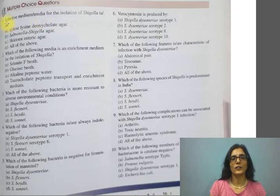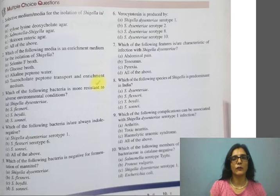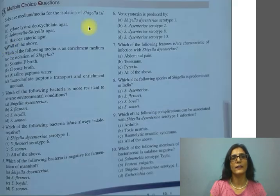The first question: which is the selective medium for the isolation of Shigella? The options are: A) Xylose Lysine Deoxycholate agar, B) Salmonella Shigella agar, C) Hektoen Enteric agar, D) All of the above. All are media used for the isolation of Shigella, so the correct option is D, all of the above.